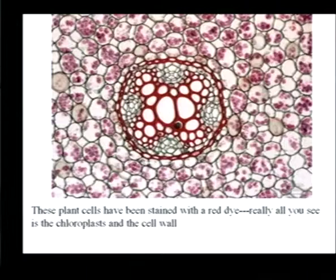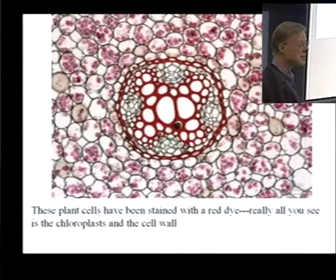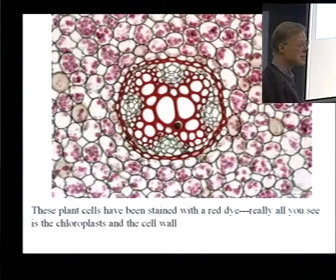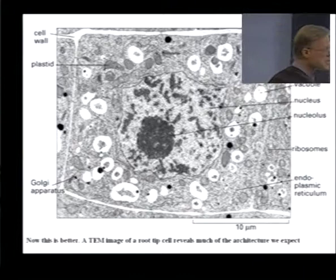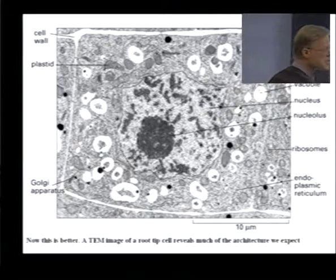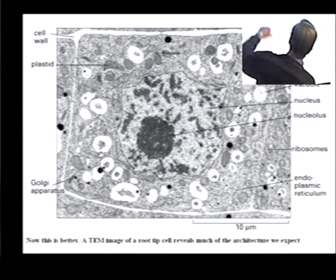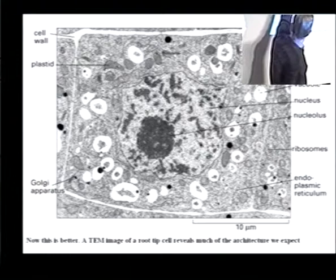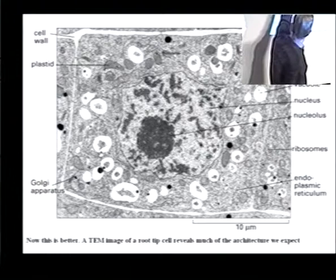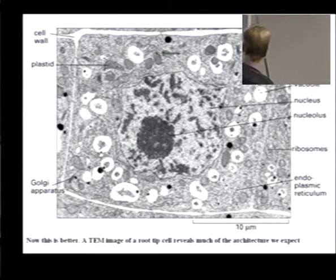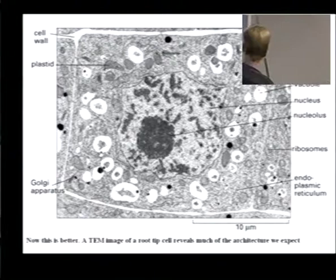To see more internal architecture, you need pictures like this — a transmission electron micrograph of a root-tip cell, probably from an onion. Now we can see the cell wall, plastids, Golgi apparatus, mitochondrion, vacuoles, and the nucleus. The nucleolus is much darker — that's where some components of ribosomes are made. The dark and light material in the nucleus is DNA associated with proteins. The electron microscope has really been instrumental in telling us more about cellular architecture.